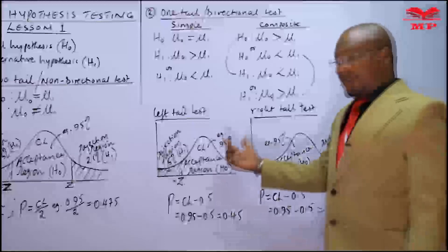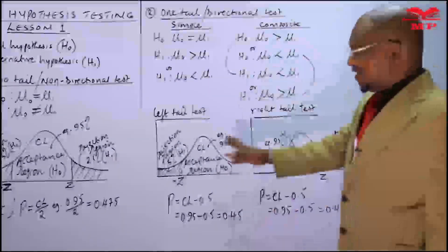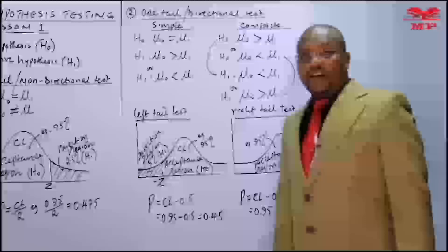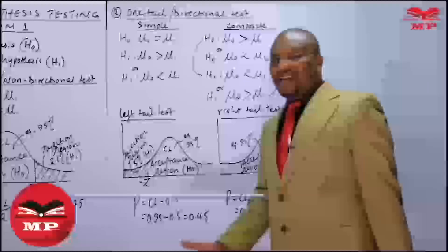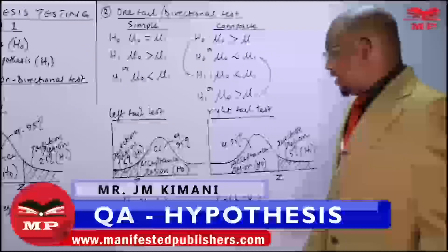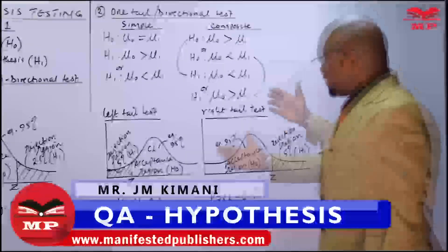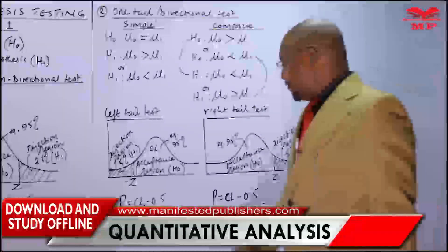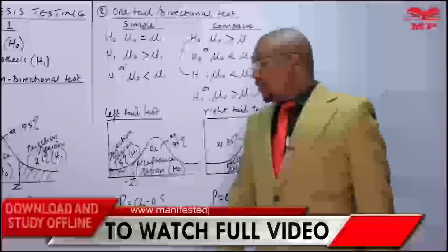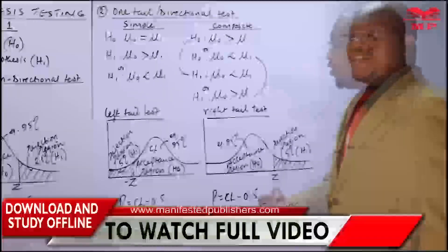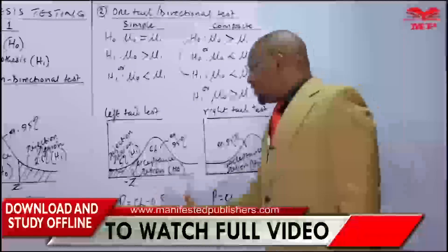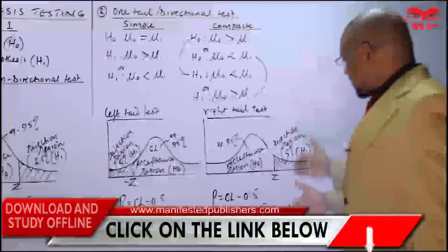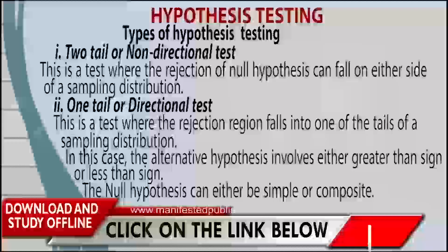I've hypothetically chosen 95%, but if you have 90%, you do the same: 0.9 minus 0.5 gives 0.4, and you may get a Z value around 1.28 from the table. If it is 99%, then 0.99 minus 0.5 gives 0.49, and from the table you'll get approximately 2.33. It's good to know these Z values given these areas. That is the left tail test and the right tail test of the one tail test.